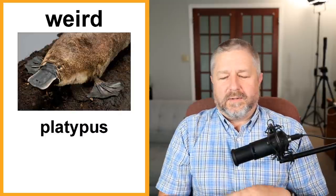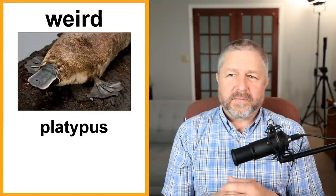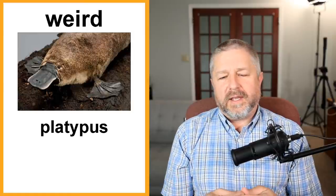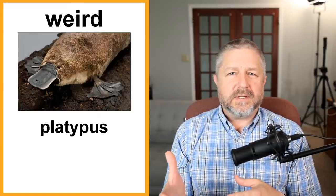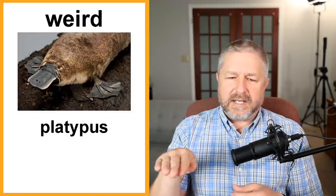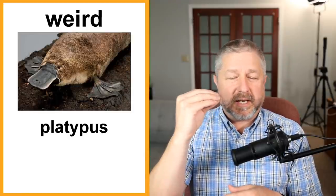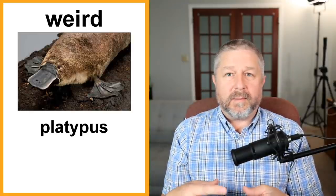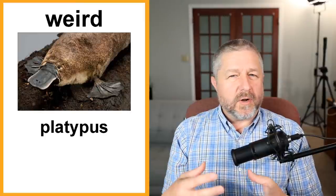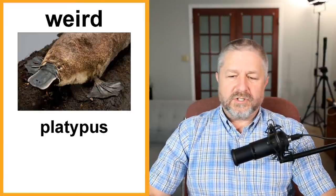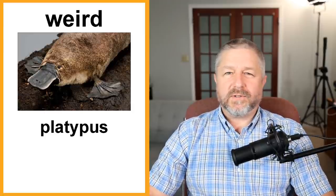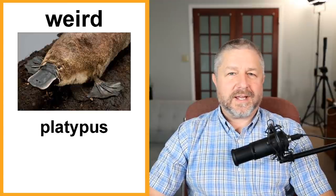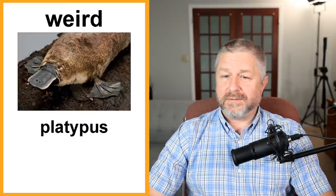Weird. Whenever I see the platypus, I think it's a weird animal. It has feet like a duck and a bill like a duck, but it kind of looks more like a beaver or a muskrat. It's a strange combination of different animals. There's always a joke that the platypus was made out of leftover parts from other animals, and I do think the platypus is a little bit weird when you look at it.